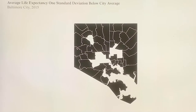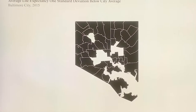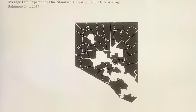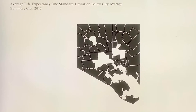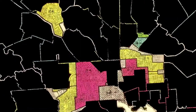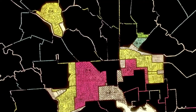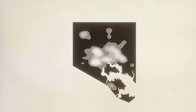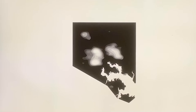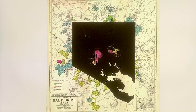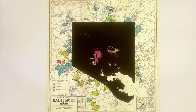A map showing neighborhoods where average life expectancy is one standard deviation or more below the average for the entire city, and layered over. New maps, old maps, say maps — those are full of use, these are full of use, and they use these.